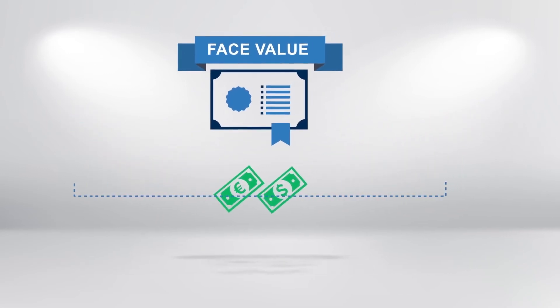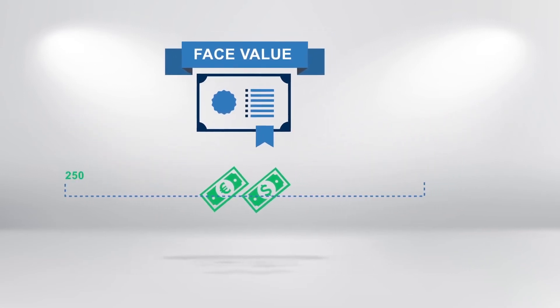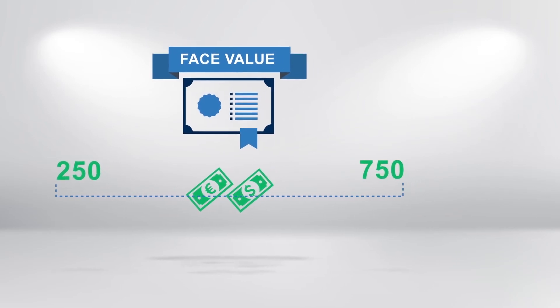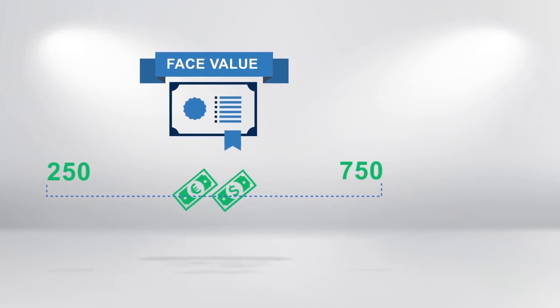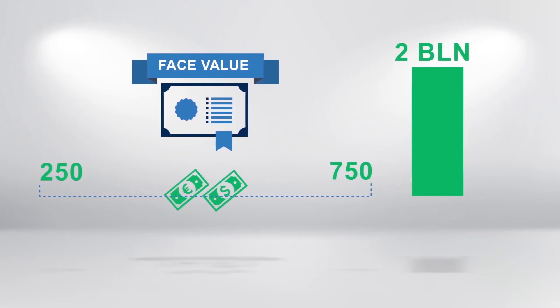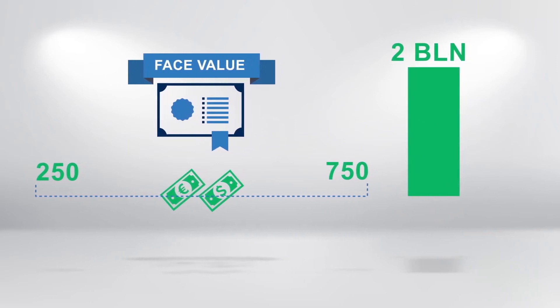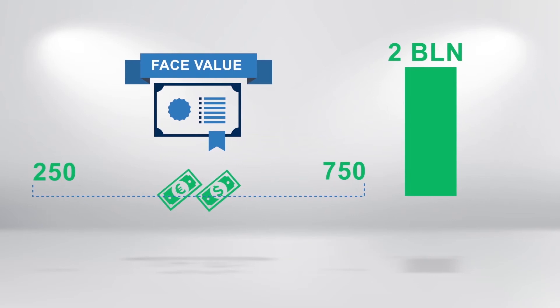The most frequent issued amount is between 250 and 750 million euros or dollars. But some large corporations have issued bonds with a principal amount of 2 billion euros or dollars.